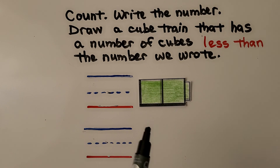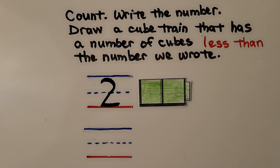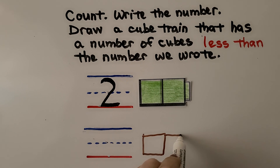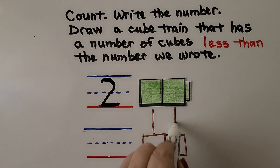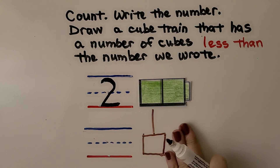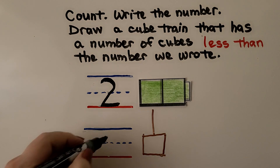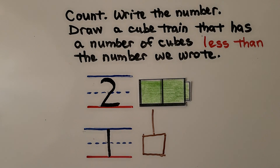Here, we need to count the cubes in the cube train. I count 1, 2. We write the number 2. We need to draw a cube train that has a number of cubes less than the number we wrote. So we need a cube train with less than 2 cubes. If I draw 2 cubes, they'll have the same number. But we need less than, so we draw a cube train with at least one taken away. One is less than 2. Our cube train only has one cube.